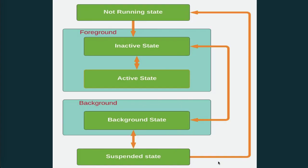In the app state diagram, you can understand how the application state works. From the not running state, the app can go directly to the suspended state or it can go to the foreground state. In the foreground state, it can go between inactive and active states. It can also go from the inactive state to the background state.